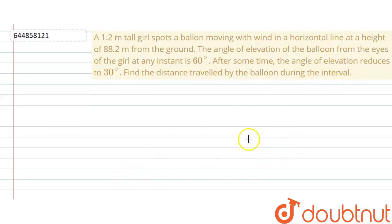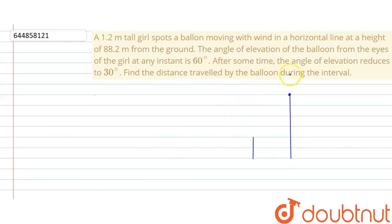So what we are given is that there is a girl — this is the height of the girl, that is 1.2 meters, and she spotted a balloon. This is the height of the balloon from the ground, given as 88.2 meters. The angle of elevation of the balloon from the girl's eye at an instant is 60 degrees.